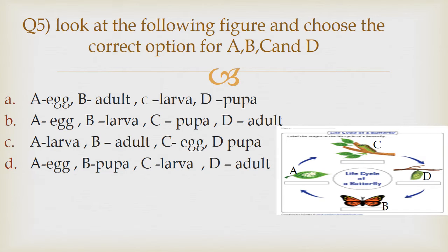Option C: A — Larva, B — Adult, C — Egg, D — Pupa. Option D: A — Egg, B — Pupa, C — Larva, D — Adult. The correct answer is Option A: A — Egg, B — Adult, C — Larva, D — Pupa.